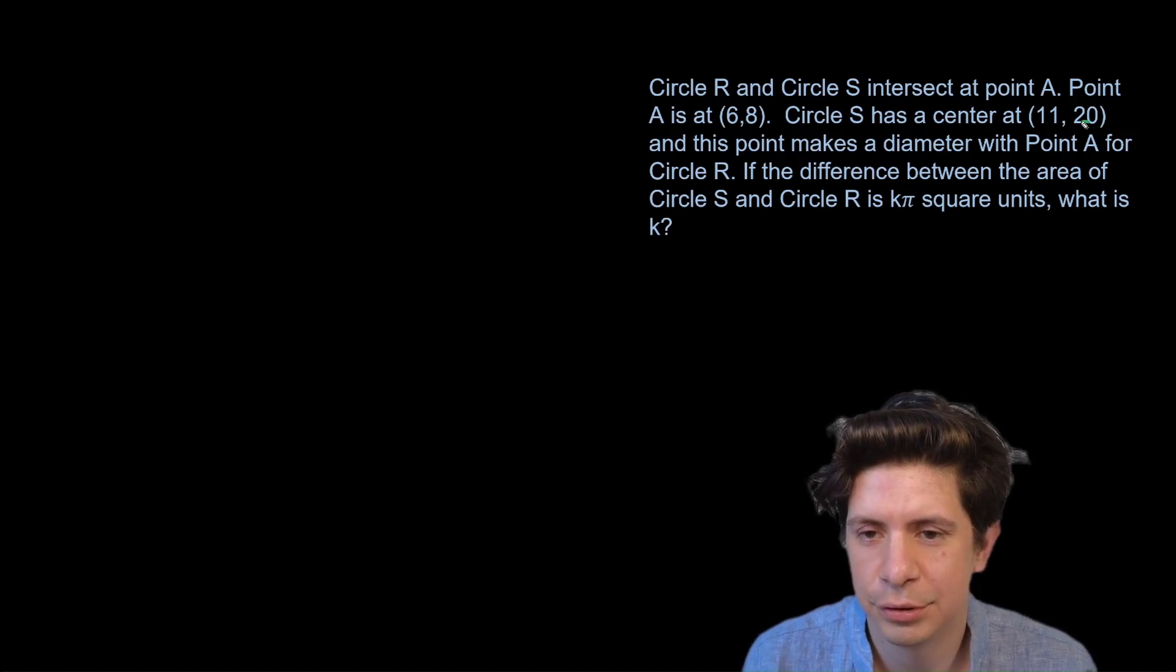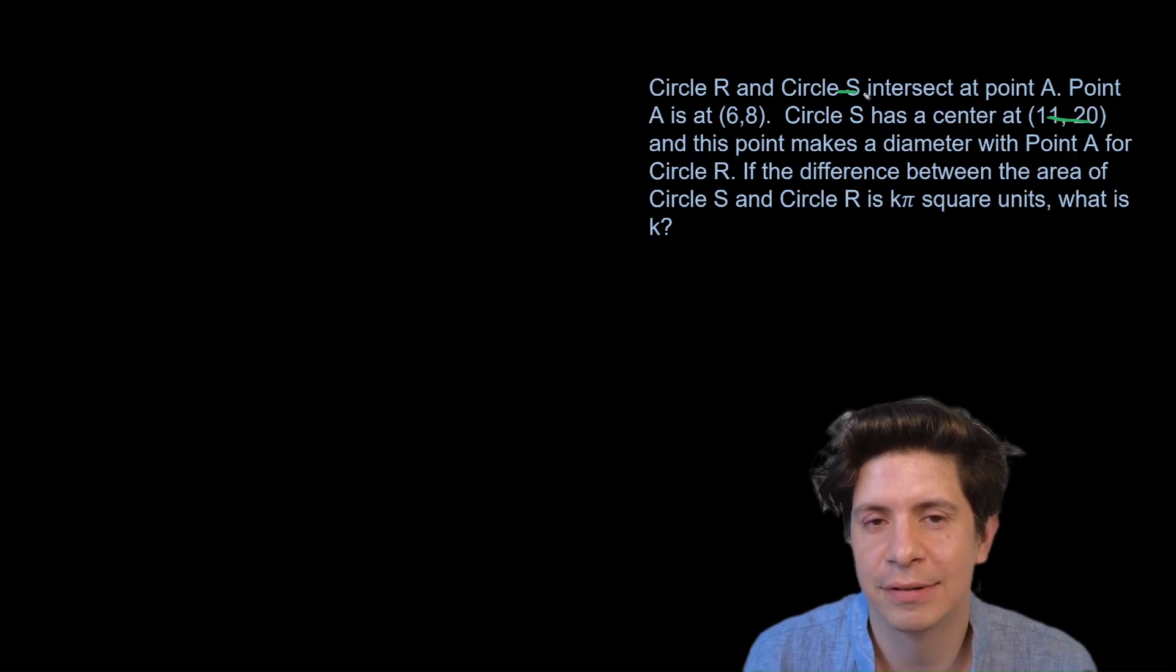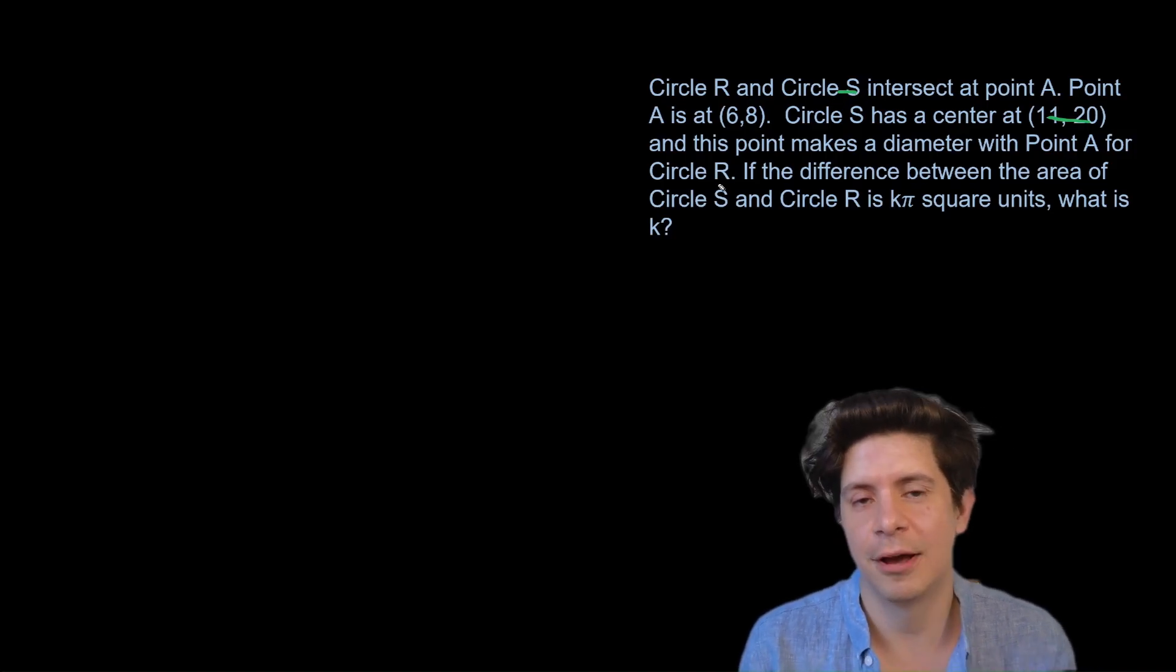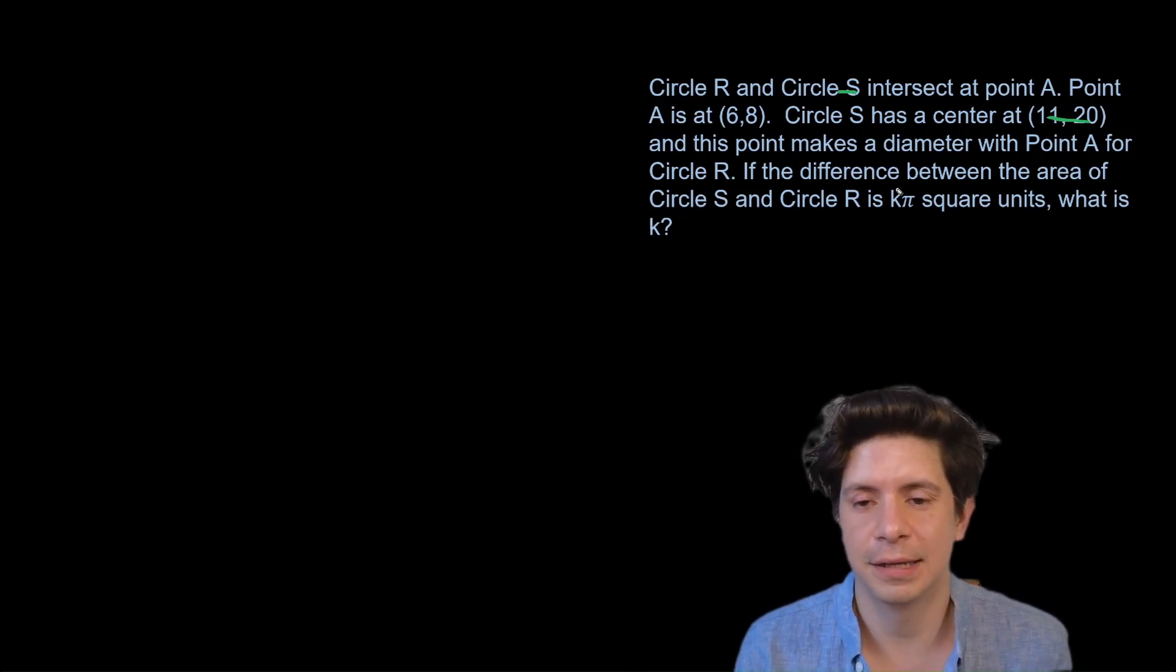So the center is at (11,20) for Circle S, and that along with (6,8) makes a diameter for Circle R. So we can find the radius for Circle S and that would give us the area, and that radius is Circle R's diameter. So we divide it by two to find its radius and now give us its area, and then we'll subtract to find k.